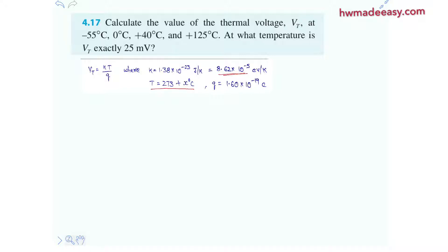So now let's solve for Vt at minus 55 degrees centigrade. So clearly it is 8.62 multiplied with 10 to the power of minus 5 over 1.6 multiplied 10 to the power of minus 19 multiplied with T. So now let's write a generalized equation for it.